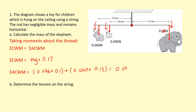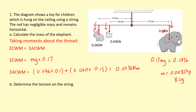That gives a total of 0.0136 Newton meters. The clockwise moment must equal the anticlockwise moment, so 0.17mg equals 0.0136. Solving for m gives 0.0082 kilograms, which is just another way of saying 8.2 grams.